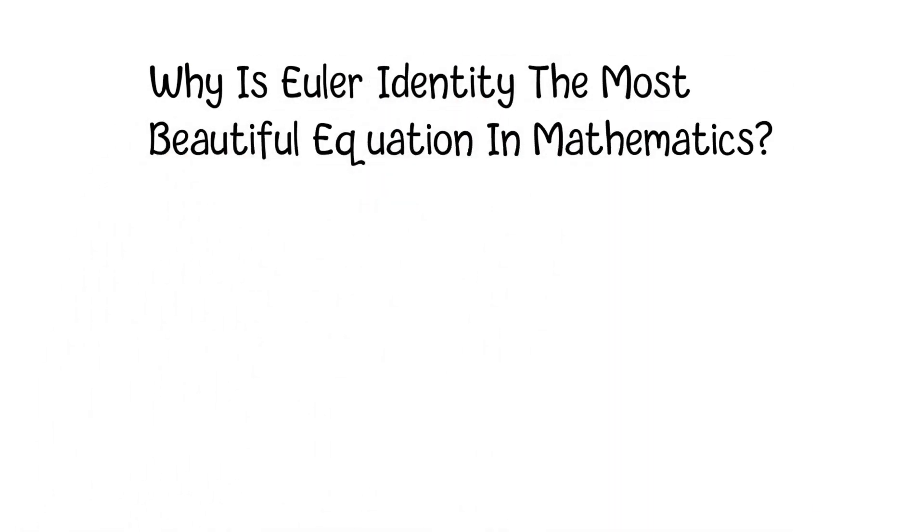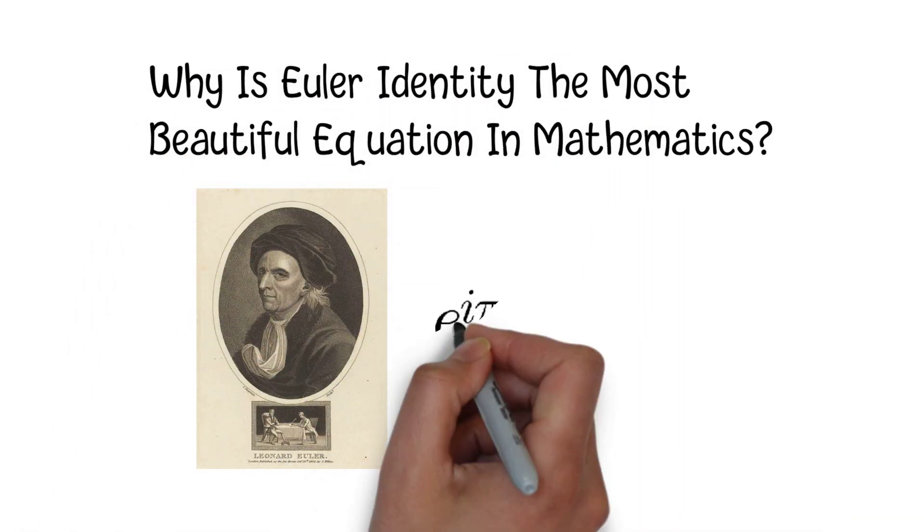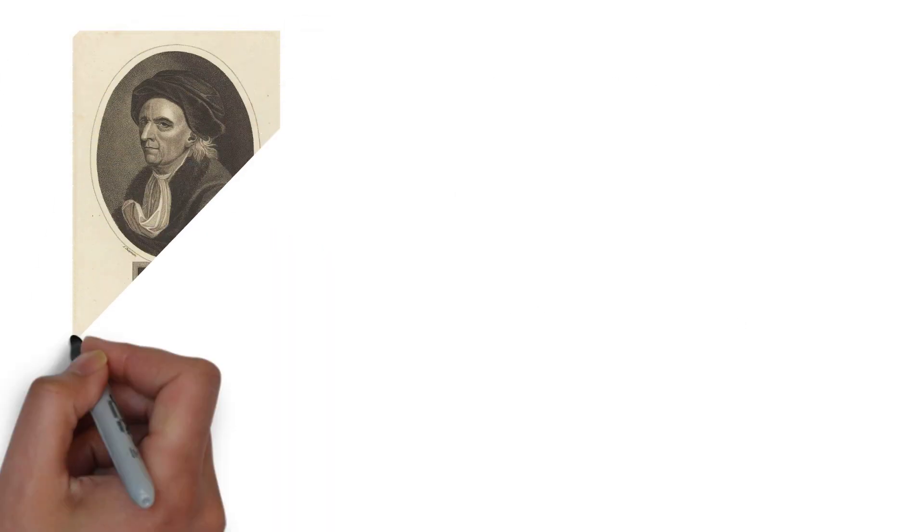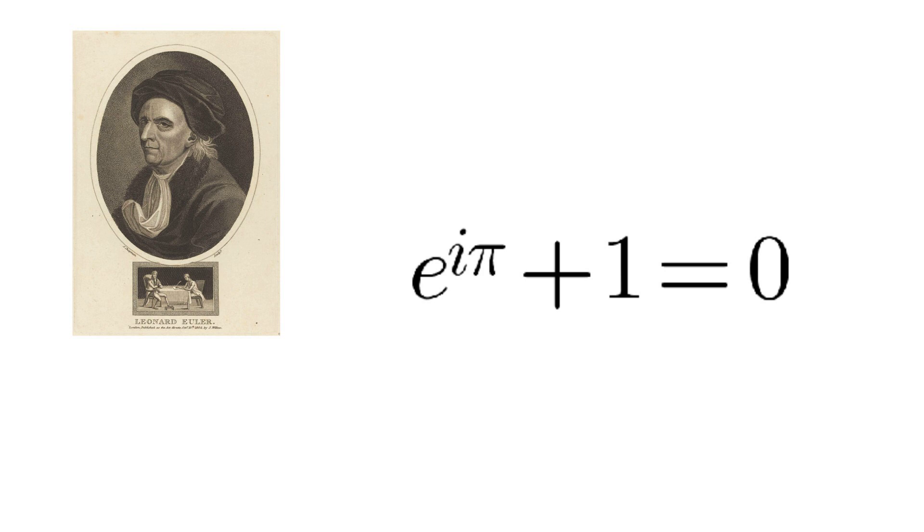Why is Euler identity the most beautiful equation in mathematics? Leonard Euler's identity is considered to be one of the most beautiful equations in mathematics because of its simplicity and elegance.